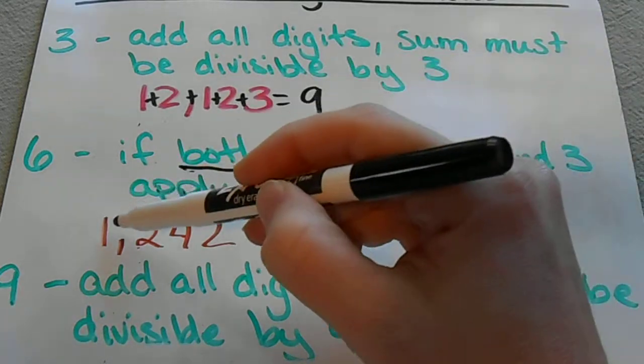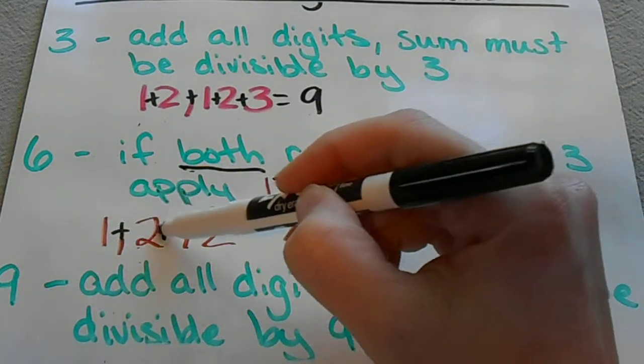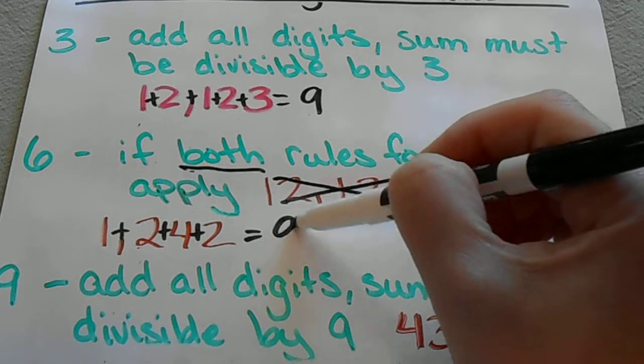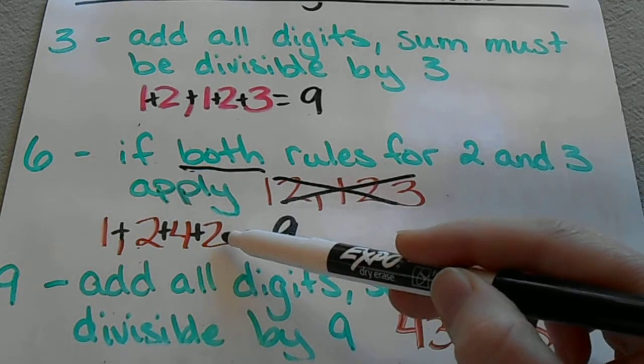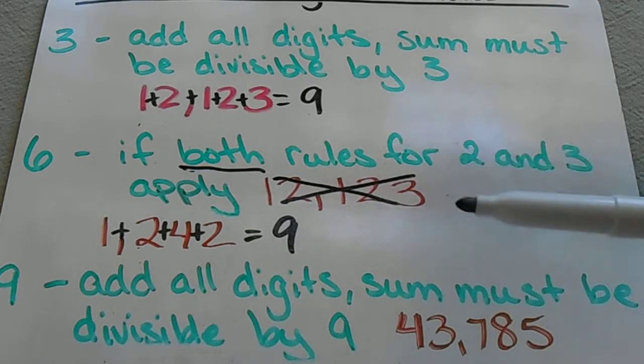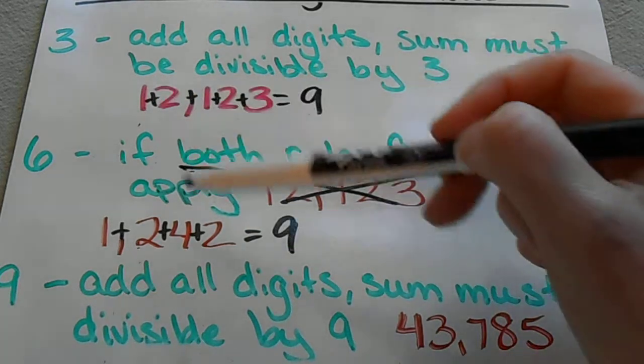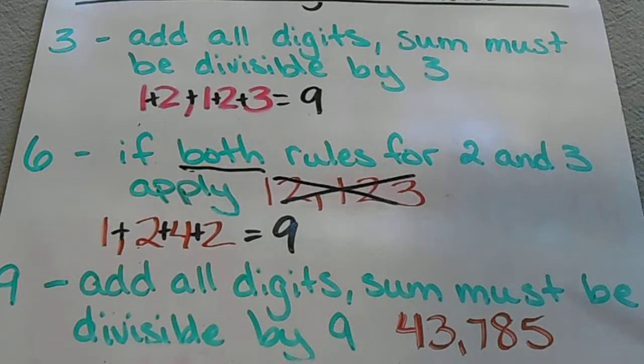But this one does work for both cases. It's divisible by 3, as we just showed in the last example, and it has an even number in the ones place. So it's divisible by 2, which means this whole thing is divisible by 6 as well.